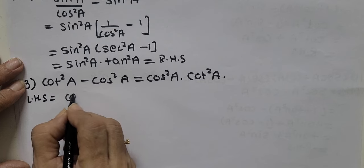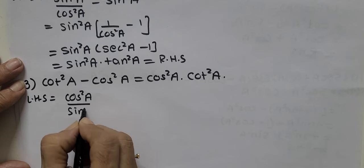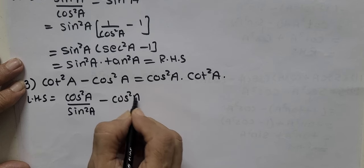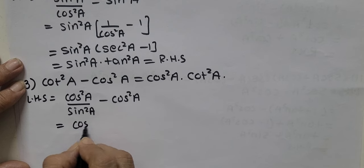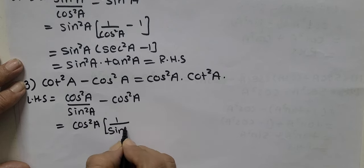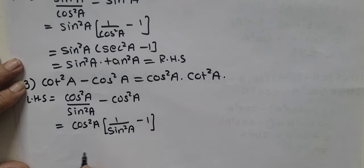Cot square A minus cos square A is cos square A upon sin square A minus cos square A. Now if I remove cos square A common from both, what will I get? 1 upon sin square A minus 1.